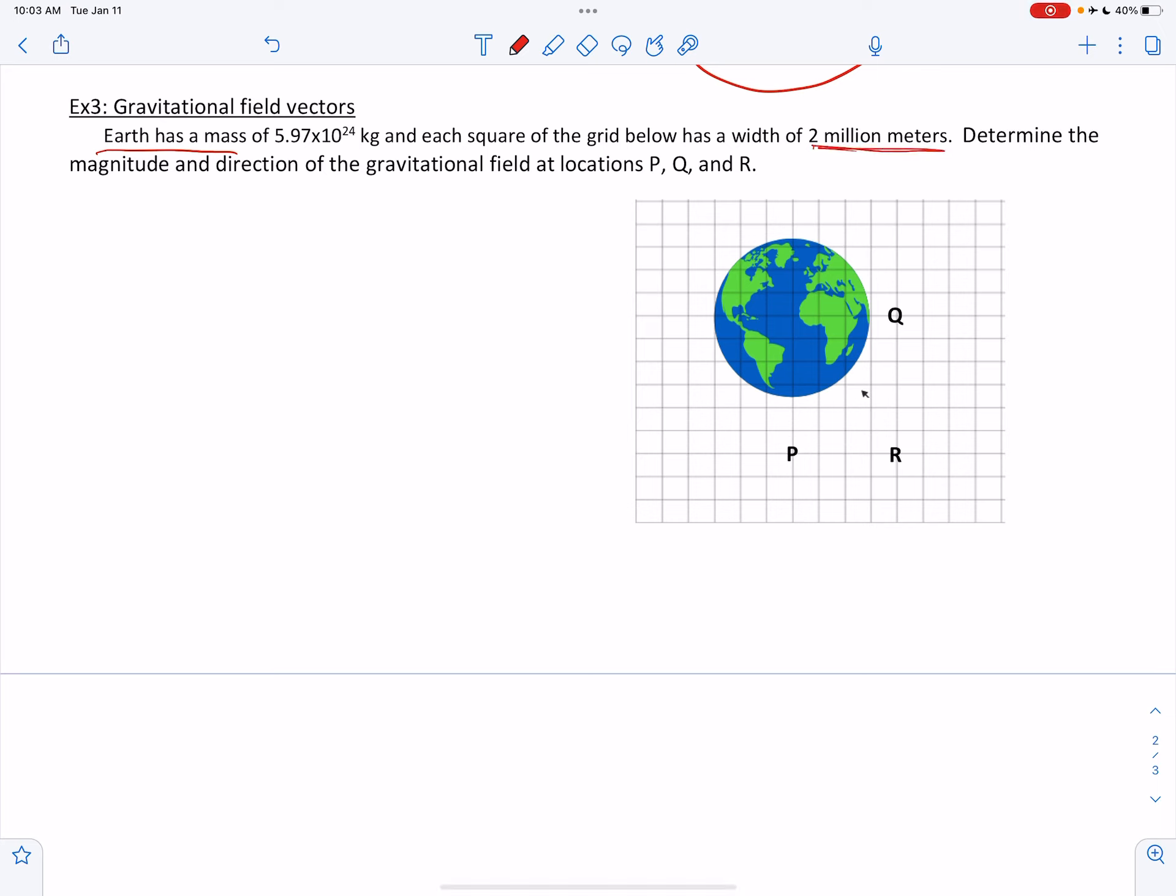Okay, so 2 million meters is going to be the distance from here to here, right? It would also be the distance from here to here, because these are squares. So the width and height of each square is 2 million meters. This is a very zoomed out view of the Earth.